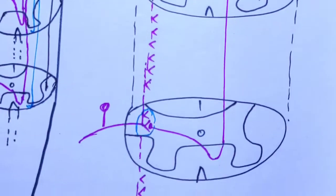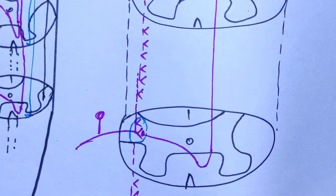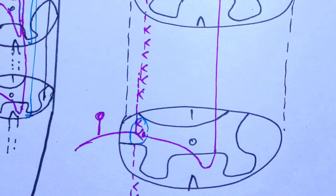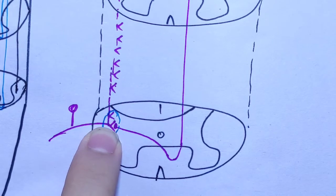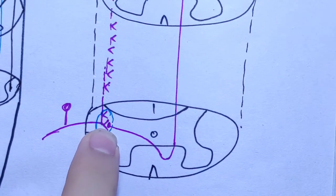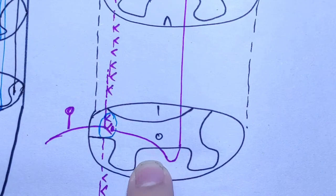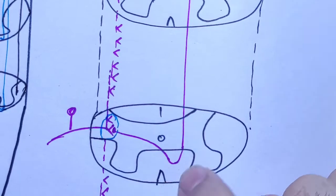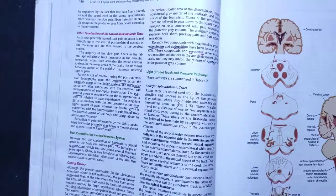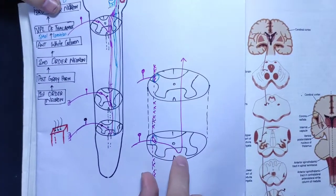Here is the same lateral spine with ascending and descending branches. This is the posterior lateral tract. When it comes to the substantia gelatinosa, it terminates by synapsing. Synapsing is the second order neuron. The second order neuron crosses via the anterior gray commissure and white column commissure. Then it goes into the anterior white column and then to the opposite side.